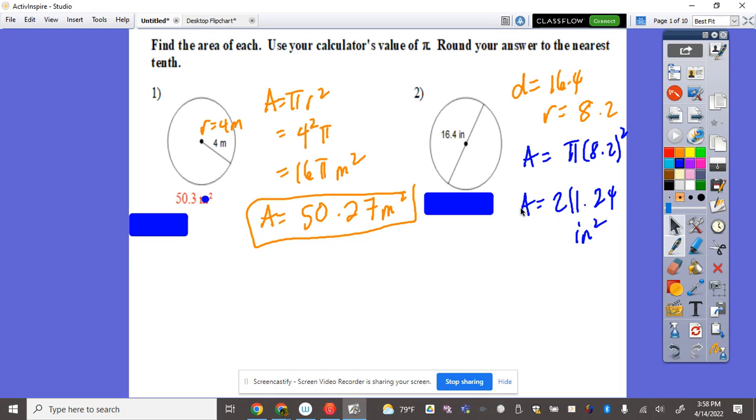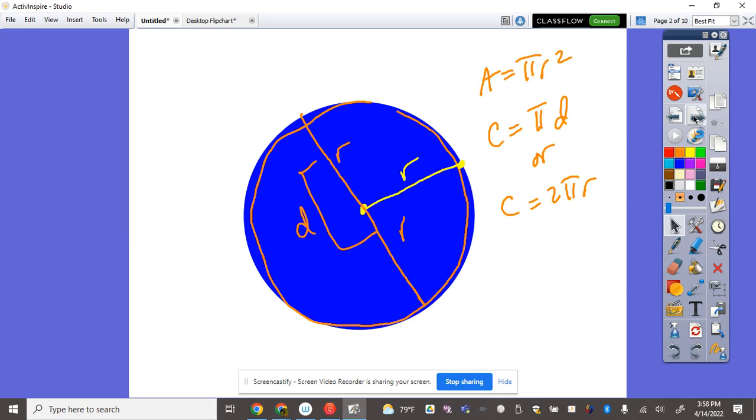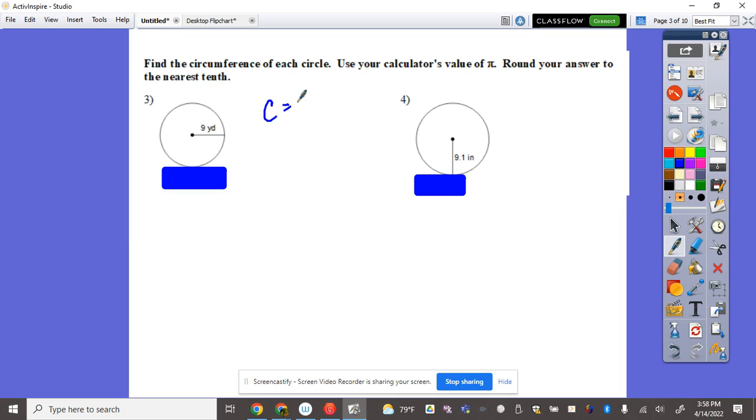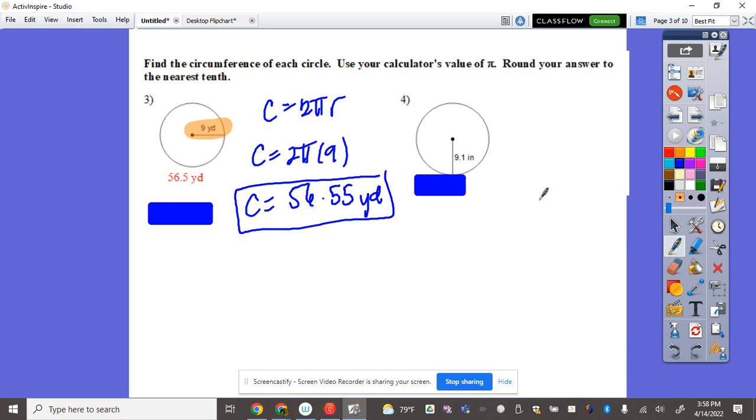Next, let's find the circumference. The circumference is 2 pi r and we have here a radius of 9. So the formula is 2 pi and the radius is 9. So therefore 2 times 9 is 18, 18 times pi is 56.55 yards. If you notice there's no squared because it's a circumference.